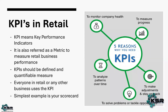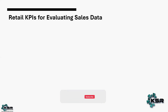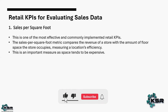So first, monitor the company's health. Then, analyze where you are not doing good. Third, if you identify where you are weak, you look for opportunities, apply measures, and assess whether those measures are working for you. Now under sales KPIs, the first KPI I want to talk about is Sales per Square Feet.